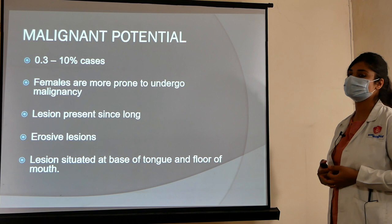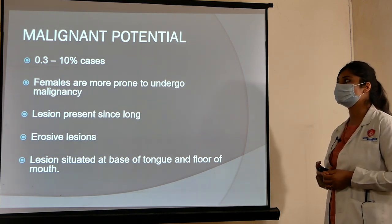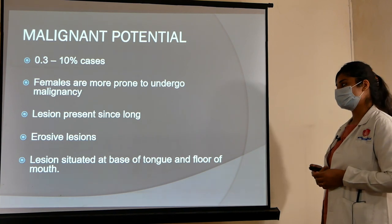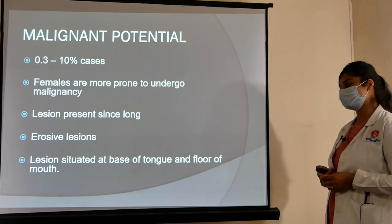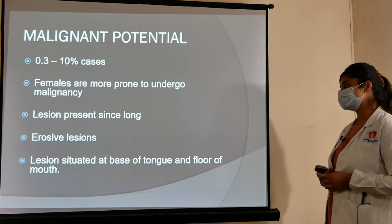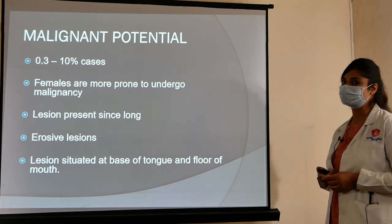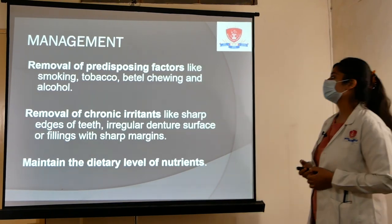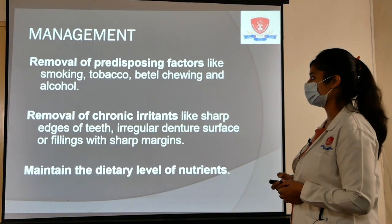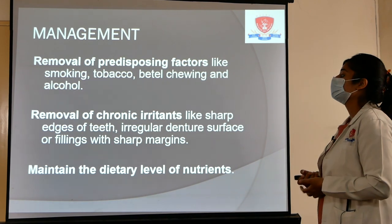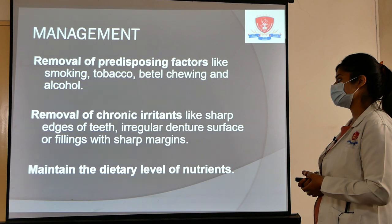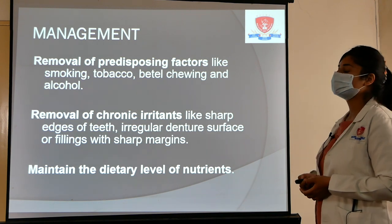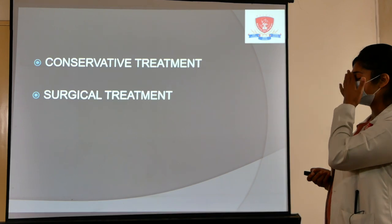Malignant potential: 0.3 to 10% of leukoplakia cases transform into malignancy. Females are more prone, and lesions present for a long time have higher malignant potential. Erosive lesions and those at high-risk sites such as the base of the tongue and floor of the mouth have higher malignant potential. Management includes removal of predisposing factors like smoking, tobacco, betel nut chewing, and alcohol, removal of chronic irritants, maintaining dietary nutrients including vitamins A, C, and E.